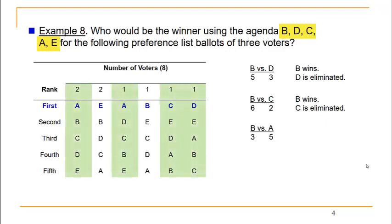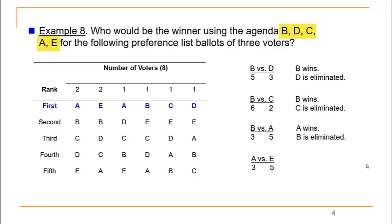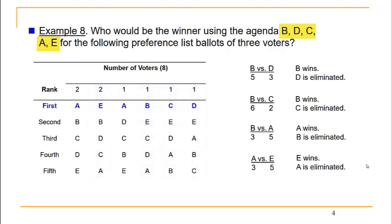In B versus A, there are three voters who prefer candidate B and five who prefer candidate A, so A wins and candidate B is eliminated. In the last head-to-head, A goes against candidate E — three voters prefer A but five prefer E, so E wins, candidate A is eliminated, and candidate E wins this election.